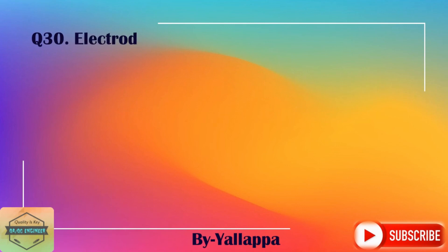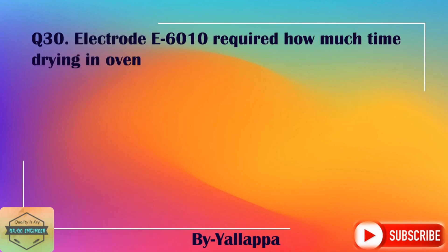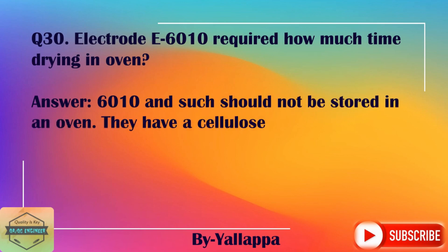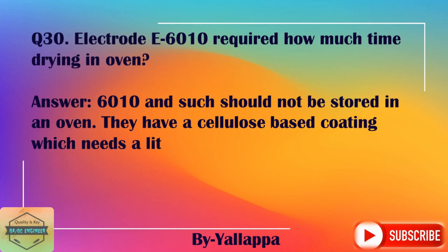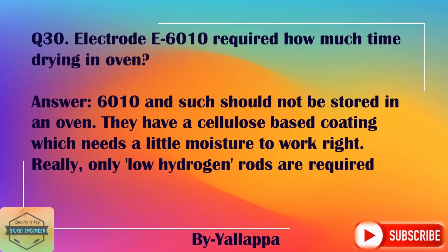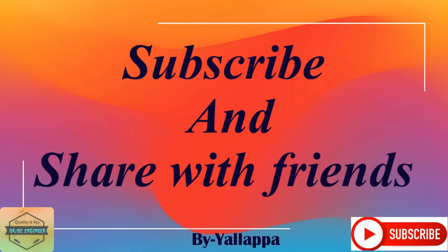Question 30: Electrode E6010 — how much drying time is required in the oven? Answer: E6010 should not be stored in an oven. They have a cellulose-based coating which needs a little moisture to work right. Only low hydrogen rods are required to be stored in an oven. Please subscribe and share with friends.